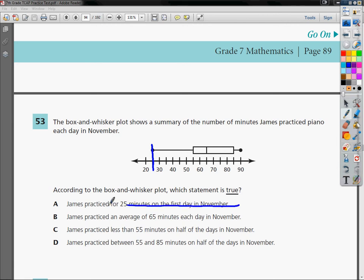So A is not the right answer. B, James practiced an average of 65 minutes each day in November. And once again, at 65, there is a line, and it is the median amount. Unfortunately, it's not the mean. The mean would be I took all of the lengths of time he did his work, added them all up, and divided by how many there were. So in November, there's 30 days, so you divide by 30. That is not what this is.